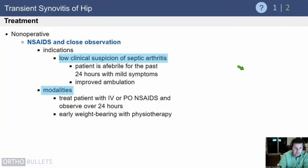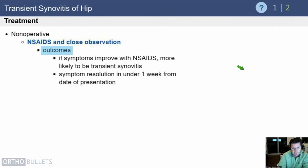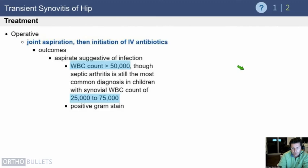Treatment for transient synovitis is essentially observation and conservative management. If clinical suspicion for septic arthritis is low, these kids are given NSAIDs with close follow-up. Family reliability is also a factor to consider. NSAIDs will generally solve the problem in about 24 to 48 hours. Kids with transient synovitis do well and get better very quickly — basically within a week it's almost gone. Operative treatment is really not appropriate here unless you have confirmed septic arthritis.